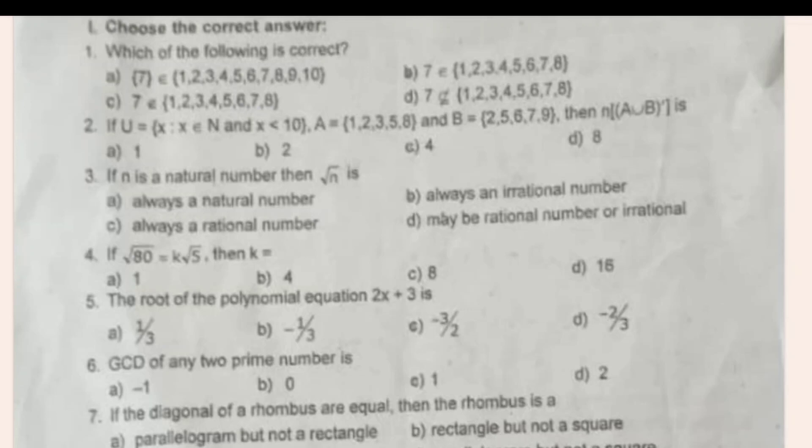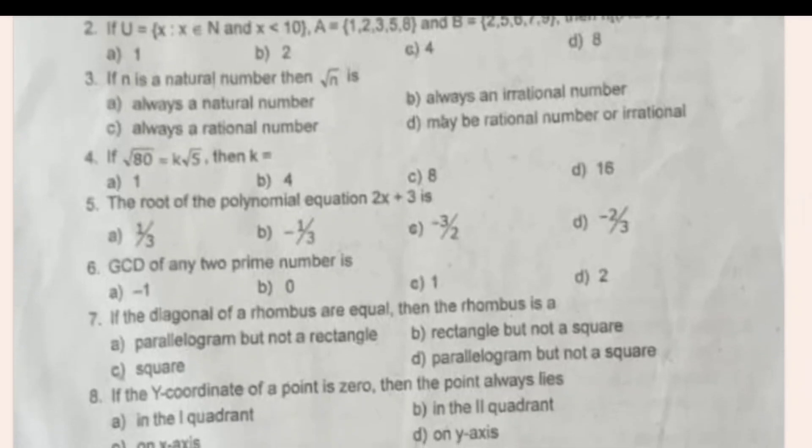Which of the following is correct. If U is equal to x summation n is equal to x greater than 10, then A is equal to 1, 2, 3, 4, 5, 8. If n is a natural number, then root of n is dash. If root of 80 is equal to k root of 5, then k is dash.